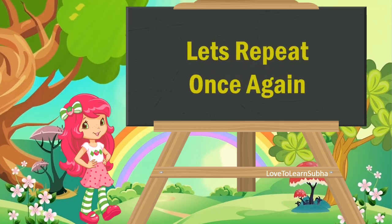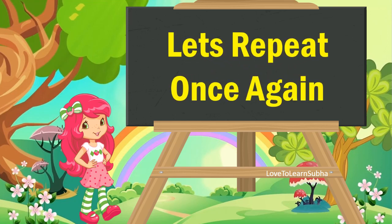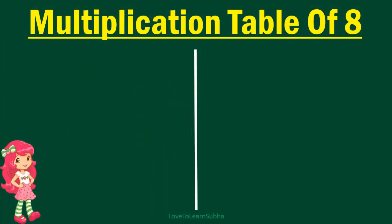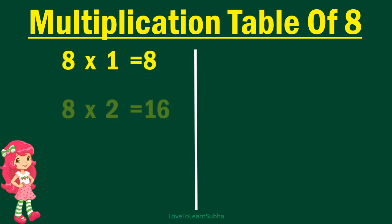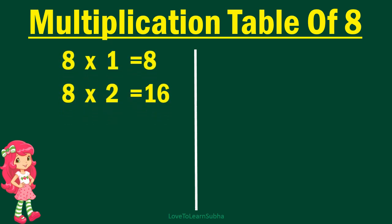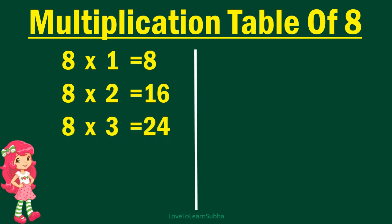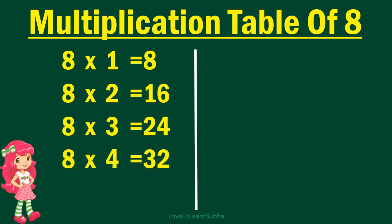Now, let's repeat it once again. 8 1s are 8, 8 2s are 16, 8 3s are 24, 8 4s are 32, 8 5s are 40,